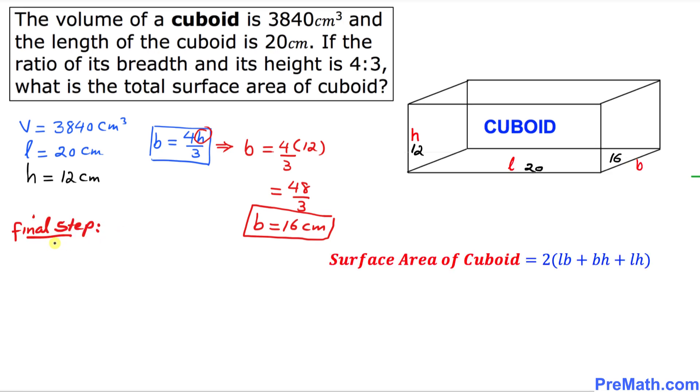Here is our final step. We are going to calculate the surface area of the cuboid. Here's the formula: surface area of the cuboid is 2 times (Lb + bh + Lh).